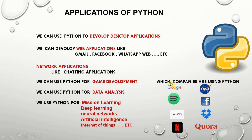Which companies are using Python? Google uses it for recommendation systems and many more. Other major companies include Spotify, Yahoo, Netflix, Quora, Dropbox, Facebook, and NASA. Even large government organizations like NASA are using Python.